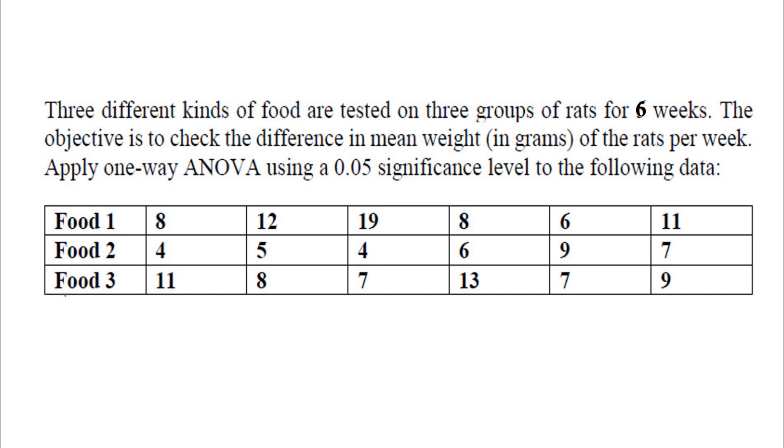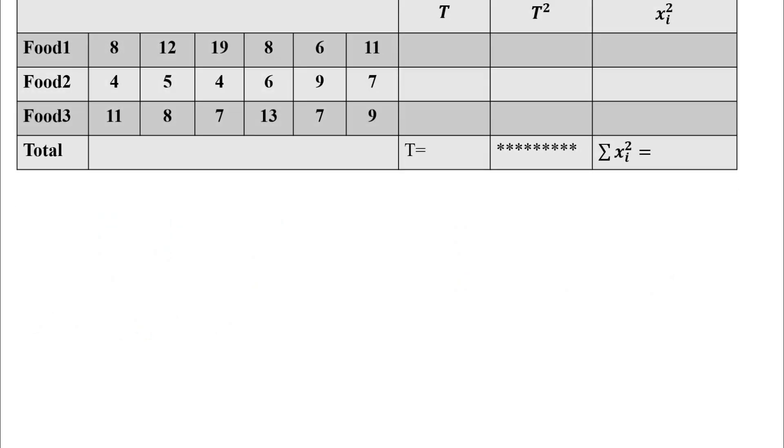Now we shall solve the problem. Moving on to the solution part, we need to define first null hypothesis. For null hypothesis, we will define H0 as mu1 equals mu2 equals mu3. After defining the null hypothesis, I will consider the table. Consider the table as whatever they have given: food 1, food 2, food 3. Consider the values, whatever the values they have provided. Then I will add all these values along this row and we will calculate the summation of those values. Similarly, we will solve for food 2, food 3.